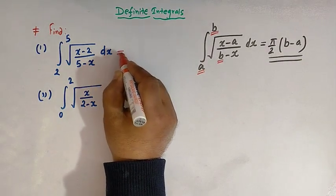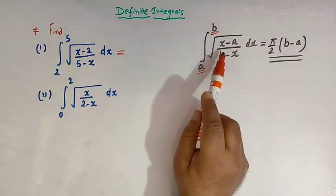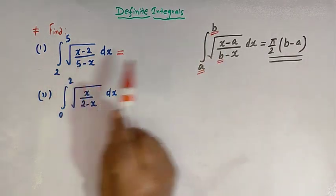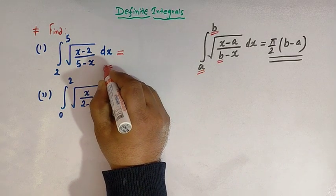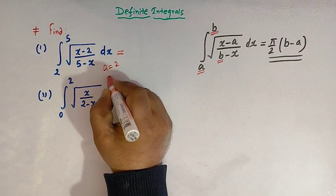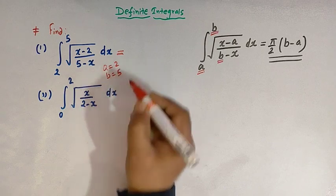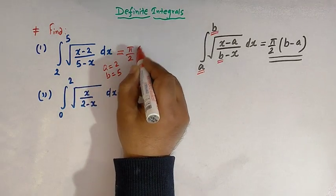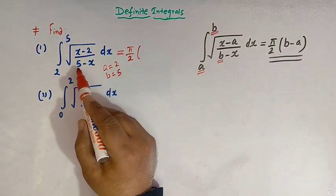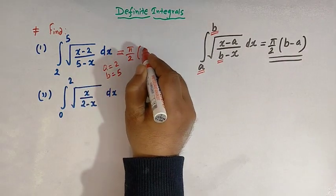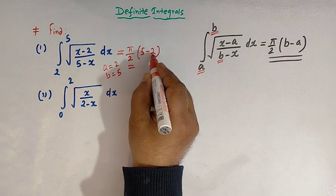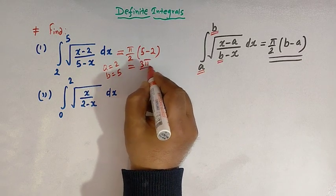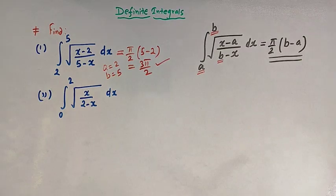So if we compare these two integrals, we see that the value of a is 2 and the value of b is 5. So the direct value is π/2 times (b − a). Here we have 5 and 2, so 5 minus 2 is 3. We get 3π/2. So this is the value of the first integral.